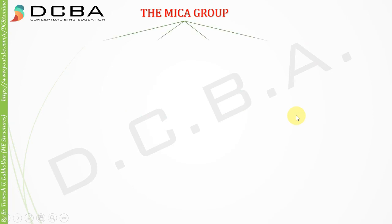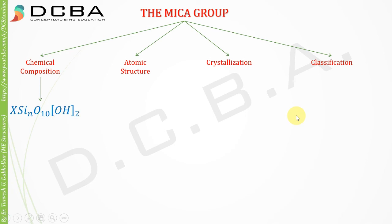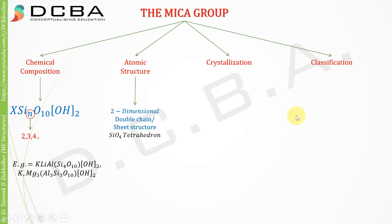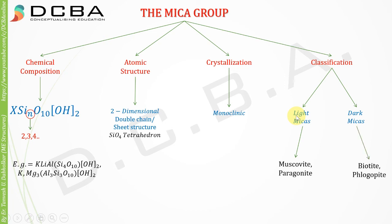The last one is the mica group. The chemical composition is XSinO10(OH)2, where n is generally 2, 3, 4, etc. The atomic structure is two-dimensional double chain or sheet structure as we already saw. Crystallization is in the monoclinic system. Classification is light mica or dark mica. Light micas include muscovite and paragonite, and dark micas include biotite and phlogopite. That was it for today's lecture. In the next lecture we will be starting a new topic. Take care, thank you.